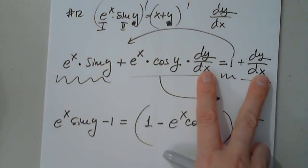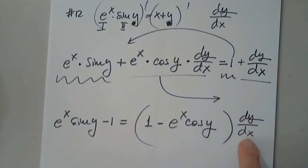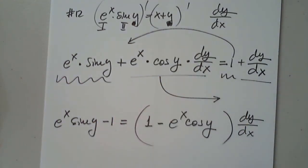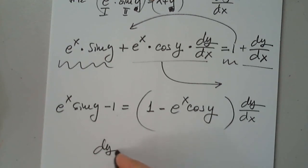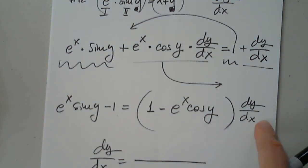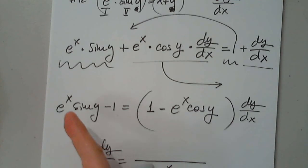Both have dy over dx in common, so that's why careful. This times this is that. This times this, moved it back to the other side is positive here. And now this is clear, dy over dx must equal whatever over whatever multiplies it. So one minus e to the x cosine y, and the top is e to the x sine y minus one.